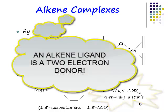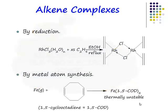An alkene ligand is a two-electron donor. There are two electrons in the pi cloud of a double bond, and it is that orbital that is being donated.